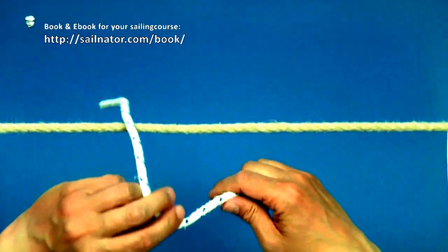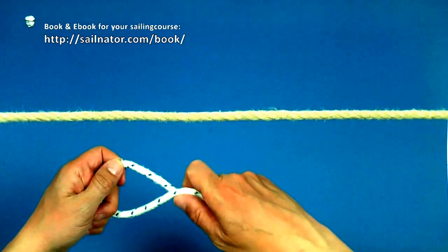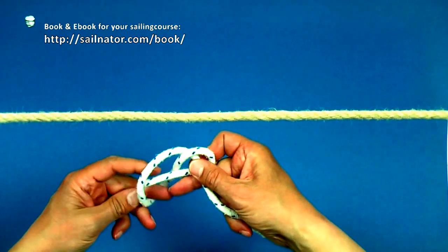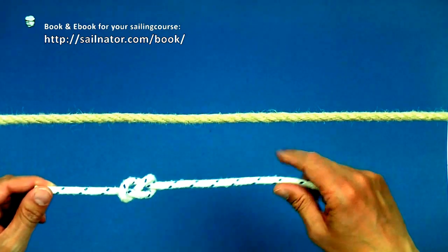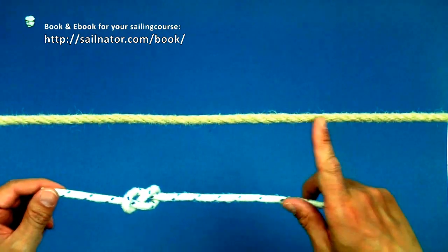I tie a figure 8 knot in one end of my line that shall constitute the fender. The transverse line shall be a railing.